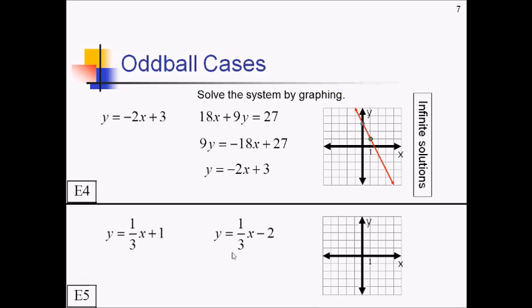All right. This next example, y-intercept of 1, up 1 over 3, and graph that first line. This time we've got y-intercept of negative 2, up 1 over 3, graph that line.